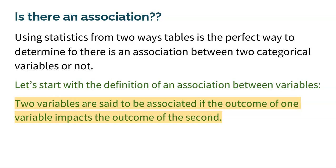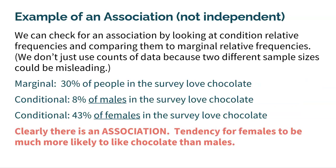Let's start with the definition of an association between variables. Two variables are said to be associated if the outcome of one variable impacts the outcome of the second. If one variable has an impact on the second, those variables have an association. We can check for association by looking at conditional relative frequencies and comparing them to marginal relative frequencies.